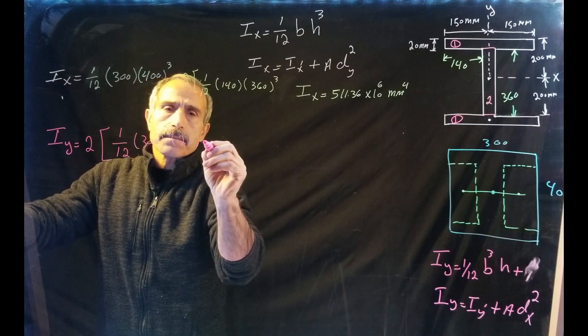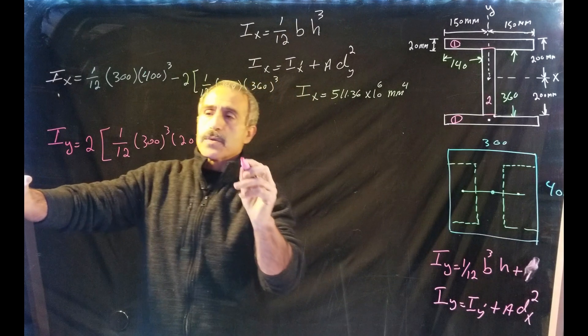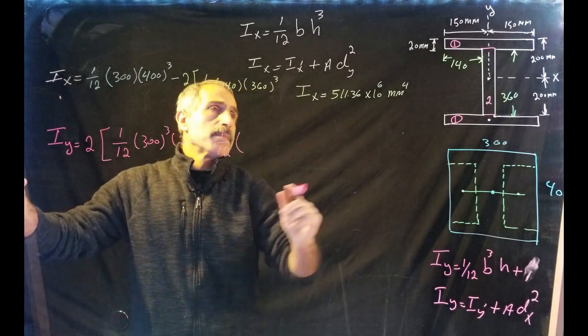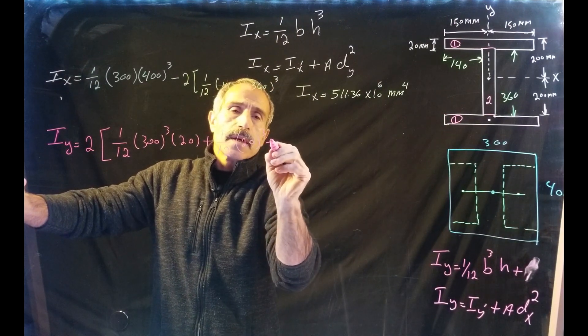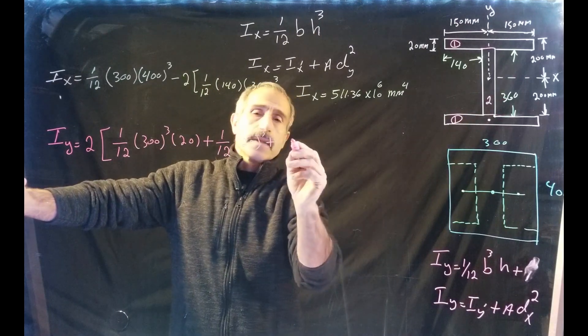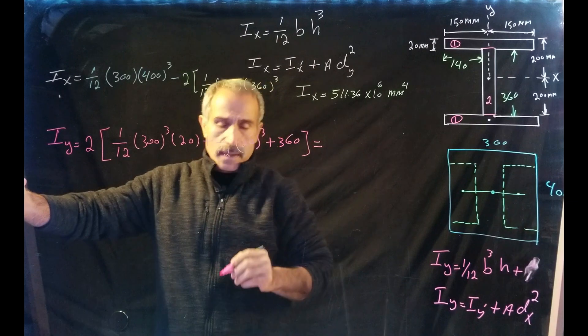All right, plus now we're going to do shape two, and shape two is right in the middle. So it's 1/12. Okay, my b is 20, so that's 20 cubed, and your h is going to be 360.